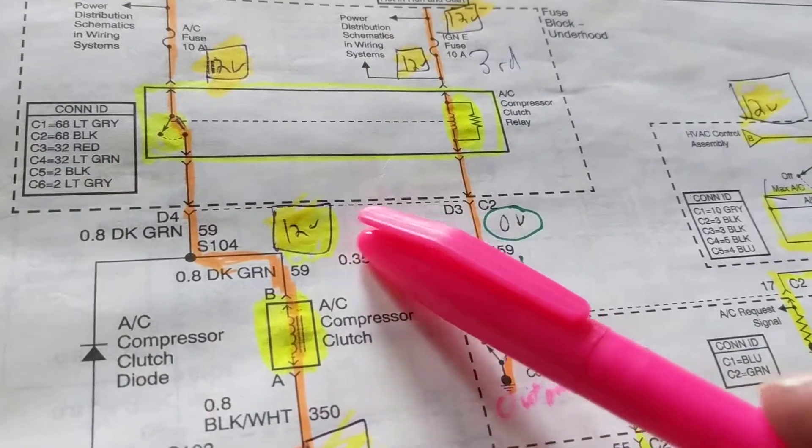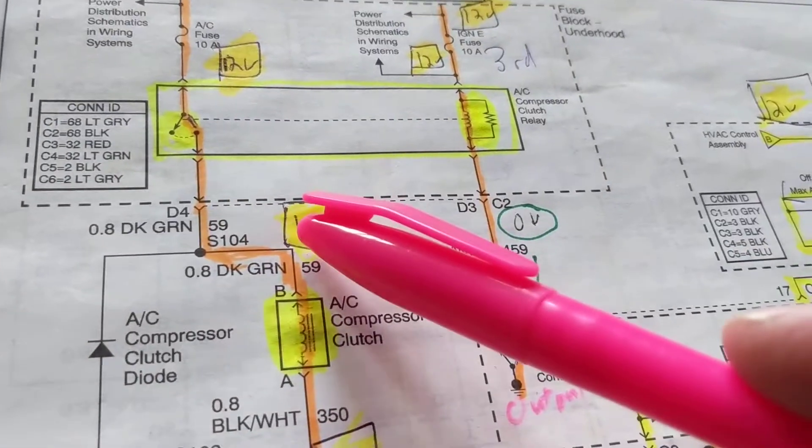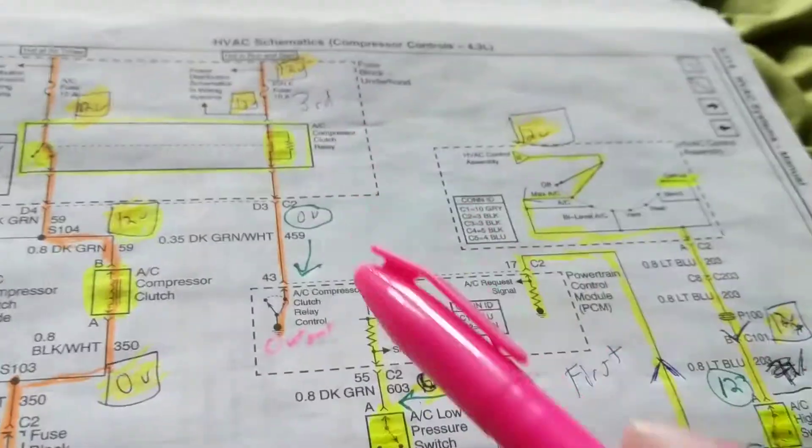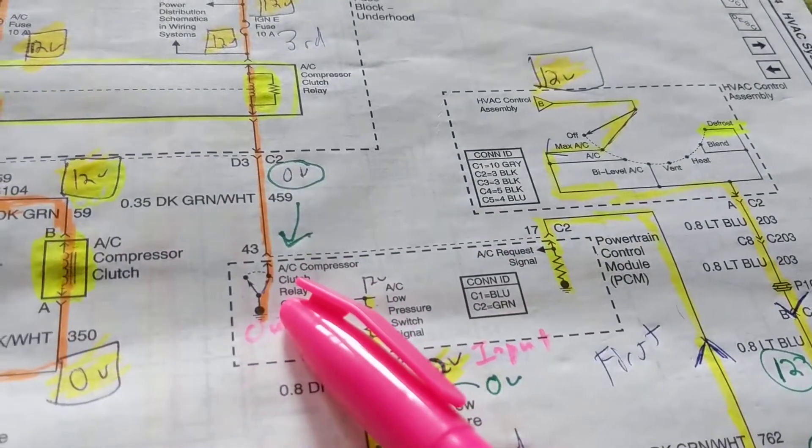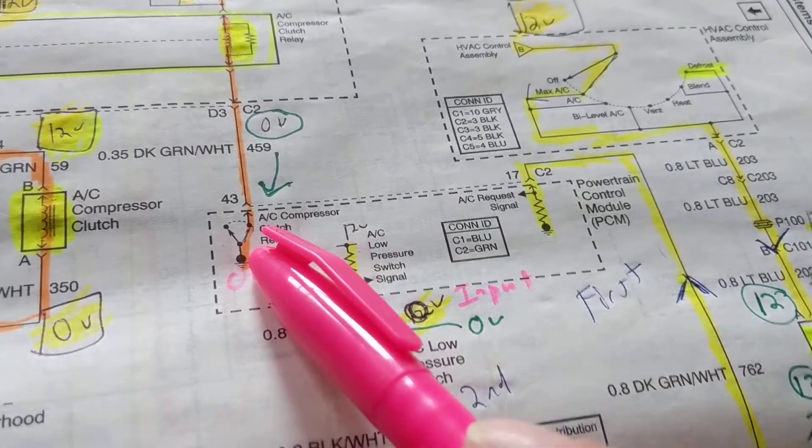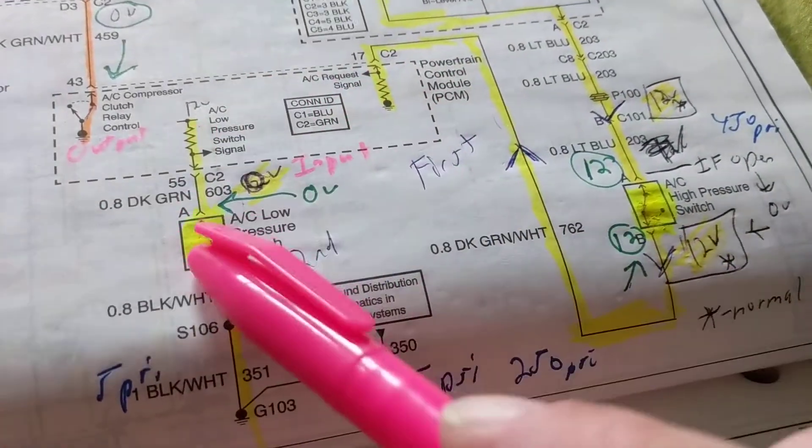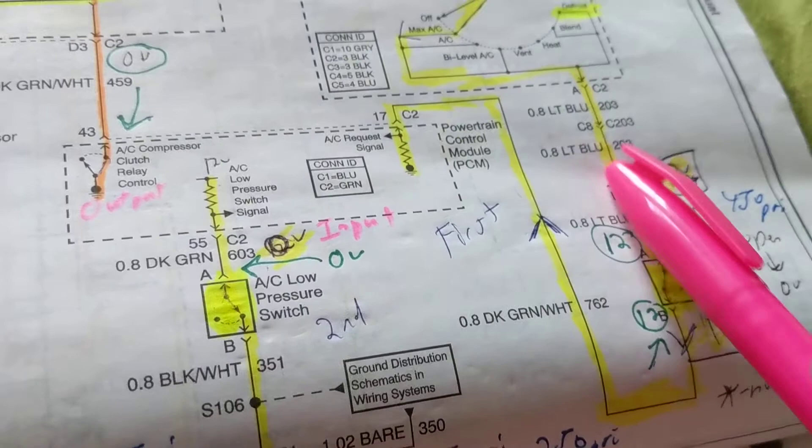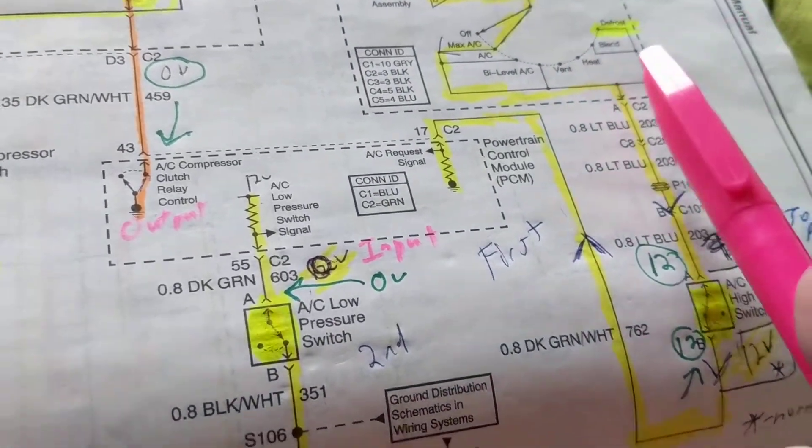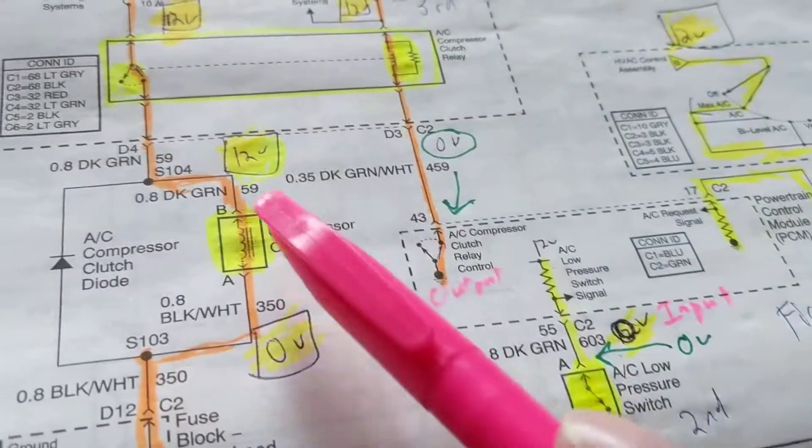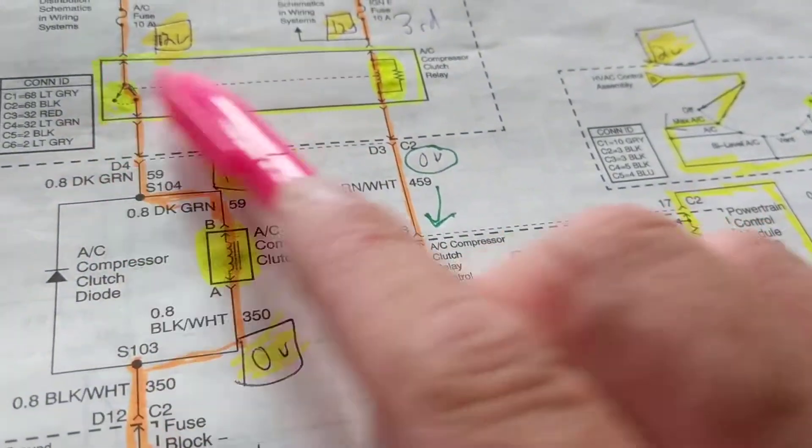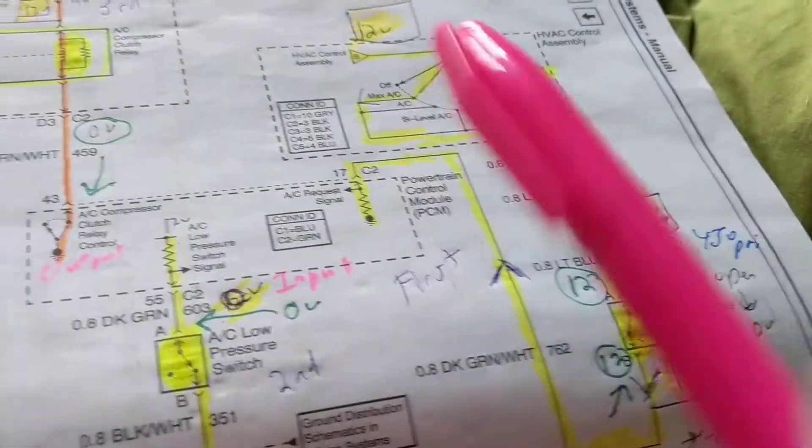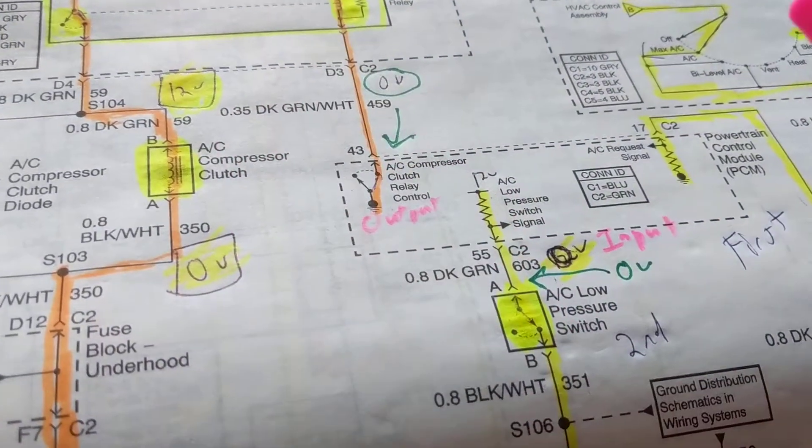12 volts here means what? This is activated. Why is this activated? Because this is activated. What activated this? Him. The computer activated this. Why did the computer activate this? Because this was activated correctly. This was activated correctly. And it received a request from the passenger or the driver for cold air. With one shot, 12 volts, that tells me all this is working. The computer is working. These are working. This is working. Time for a new clutch or compressor.